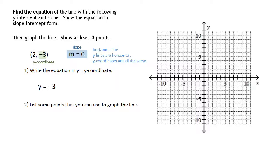And you can use the -3 to list some more points in order to graph the line. As long as you keep all of your y's at -3, you can pick anything you want for x. You can pick 0, 2, -7. It doesn't matter anything that you want. Put into the x-coordinate position. And then just plot those points.